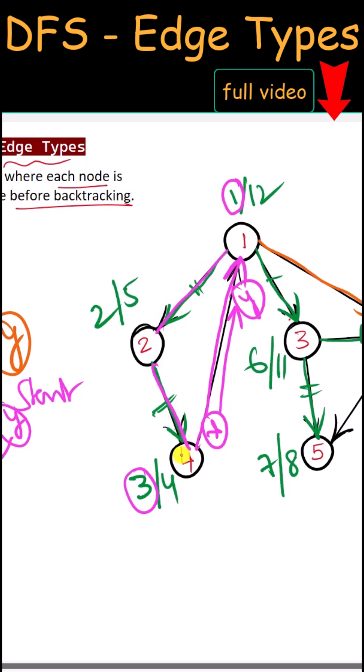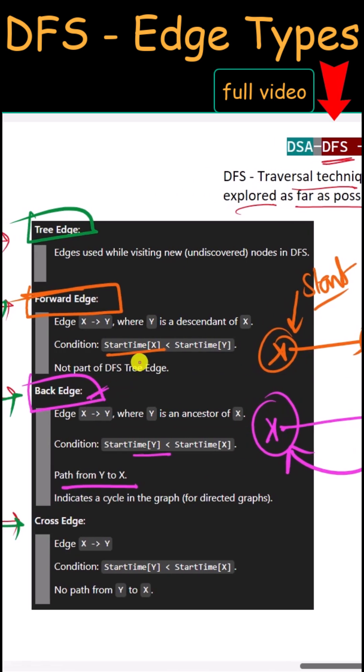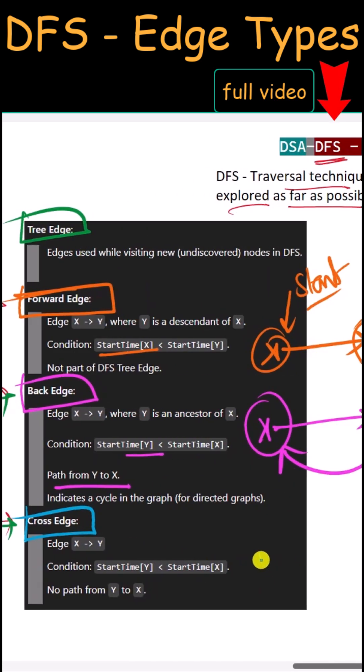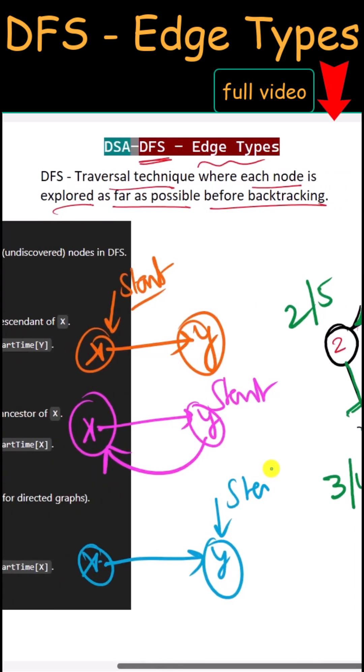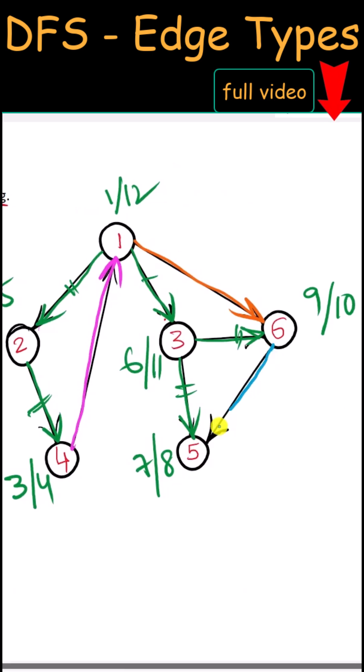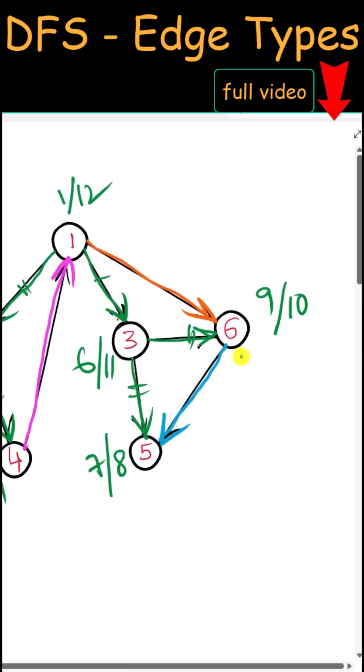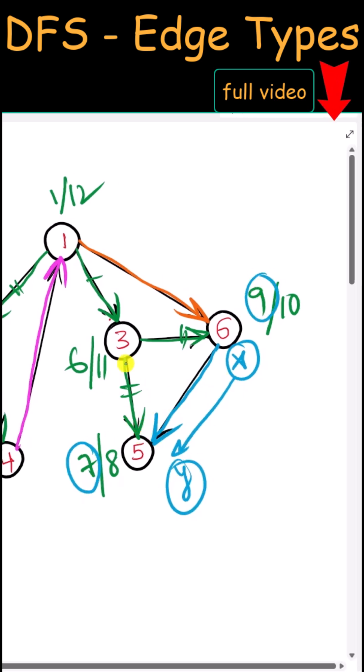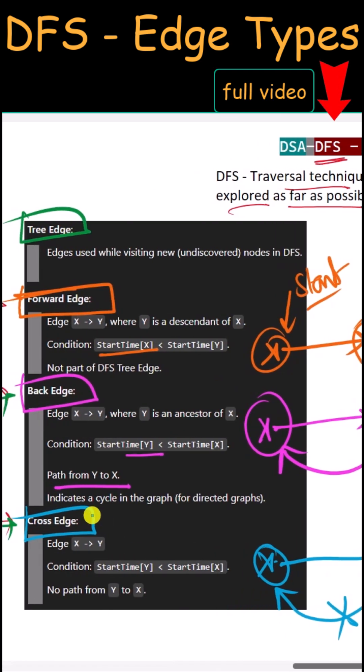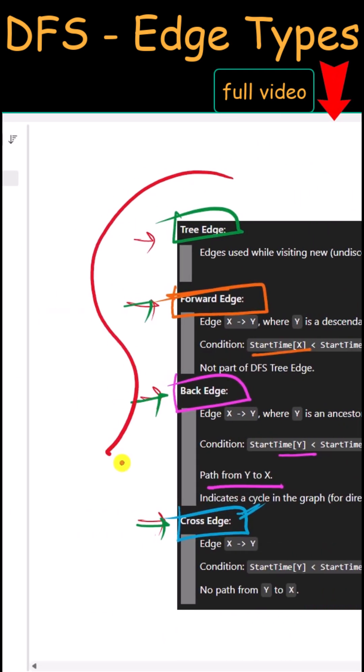Next we have cross edge. This is similar to back edge where Y should start before X. The difference is that here we should not have any path from Y to X. Like the edge from 6 to 5. 6 is X, 5 is Y. Y starts before X and we do not have any path from Y to X, so that is one example of a cross edge. These are the different DFS edges.